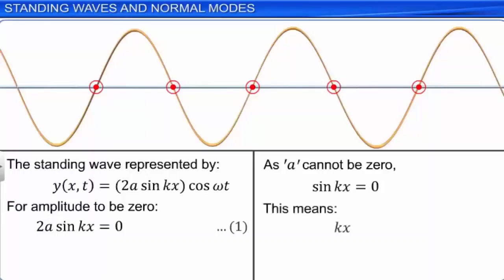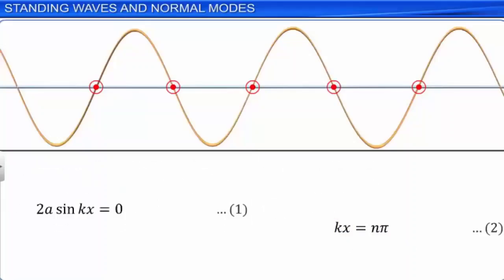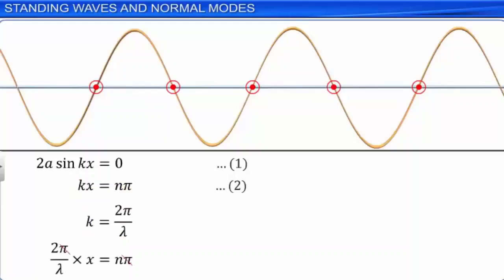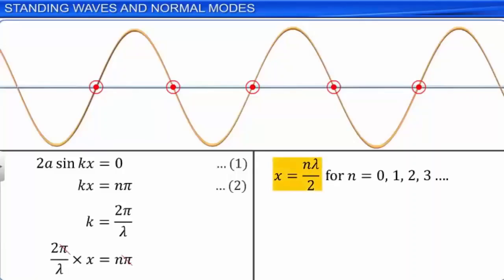The values of n are 0, 1, 2, 3, and so on. We know that k = 2π/λ. Substituting k = 2π/λ in equation 2, we get x = nλ/2, for n = 0, 1, 2, 3, and so on. These values of x give the positions of zero amplitude of the resultant standing wave. The positions of zero amplitude are called nodes. The distance between any two consecutive nodes is λ/2.